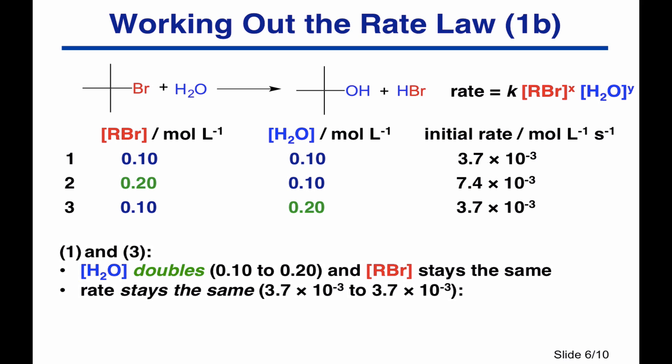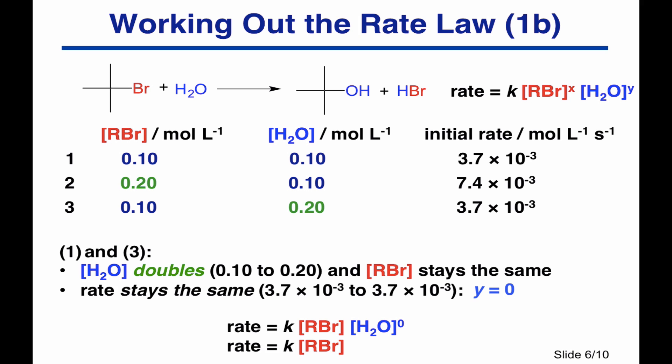Looking at experiments one and three: we doubled the water concentration from 0.1 to 0.2 and kept the alkyl bromide concentration the same. Any effect on rate was purely down to doubling the water concentration. But the rate stayed the same — so the concentration of water has no effect on the rate of reaction, and Y is 0. Anything to the power of 0 is just 1, so our final rate law is that the rate equals the rate constant K times the alkyl bromide concentration.